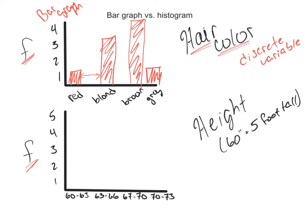Then I would go through and say brown hair, gray hair, black hair, whatever I'm doing. Bar graphs, when we use discrete variables, think more nominal. This definitely uses nominal and ordinal data.